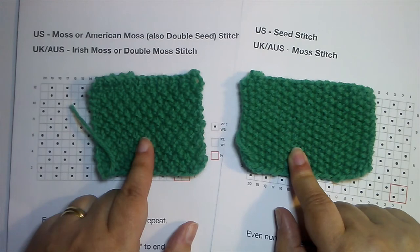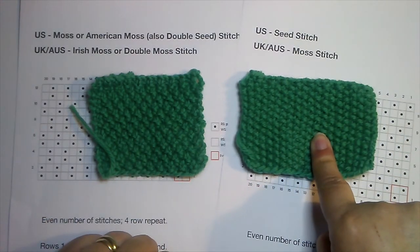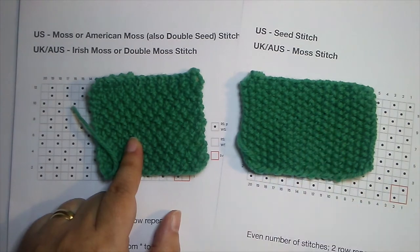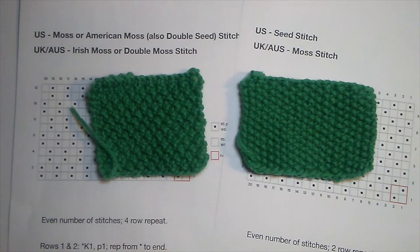In the UK and Australia, this one is called moss stitch, and this one is called Irish moss or sometimes double moss. So you can see how it can often be confusing with all of these names that are so similar.